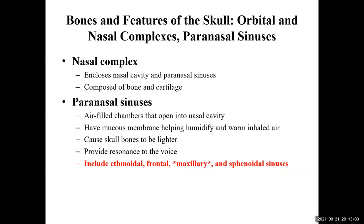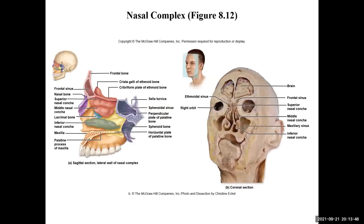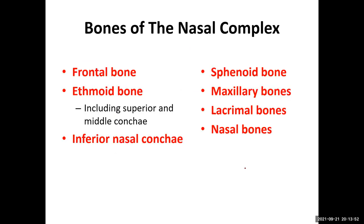The paranasal sinuses are spaces inside the bones that help make them lighter. They are lined with mucous membrane, which helps humidify and warm the air you breathe in — important because dry air can dry out the mucosa of your respiratory system. The four paranasal sinuses are the ethmoidal, frontal, maxillary, and sphenoidal sinuses.